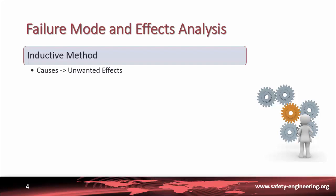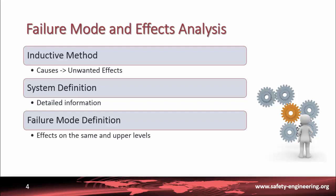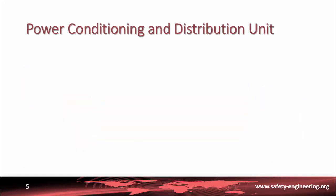In order to carry out a failure mode and effects analysis, we first have to define the system. Then we need detailed information about the system architecture and the different component behaviors. For each component, failure modes must be defined. For each failure mode, we analyze its effect on the same level and on the upper levels. This technique is mostly used to understand electronic or mechanical failures of primary components. Now we will study the power conditioning and distribution unit of our satellite. This unit contains power supply electronic converters.